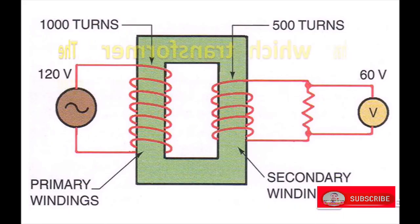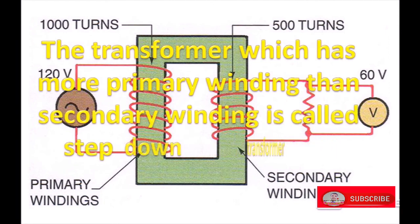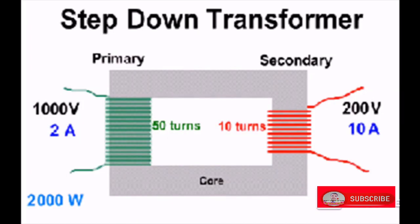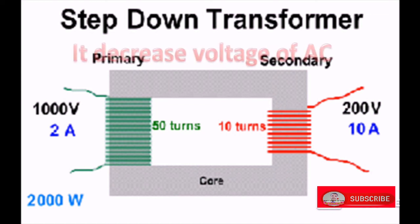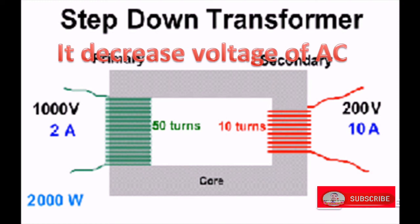The transformer which has more primary windings than secondary windings is called a step-down transformer. It has more number of primary coil turns than secondary coil turns. A step-down transformer converts high voltage AC to low voltage AC, or it decreases the voltage of alternating current.